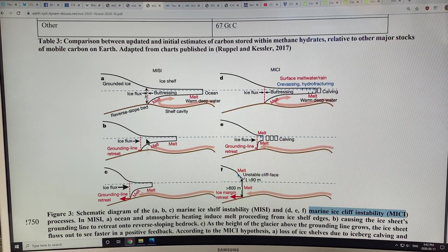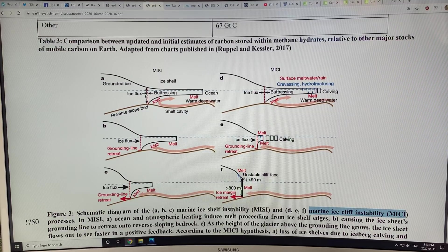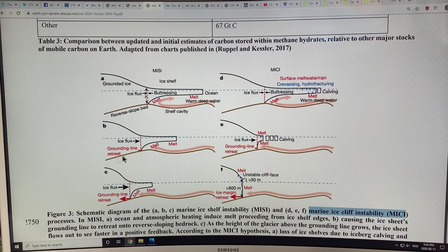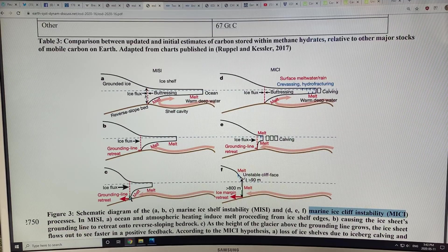This is an instability, an unstable situation, because the melting can increase as you go back further, because you're going into deeper and deeper water. Eventually, as the grounding line retreats further back, the warmer water can come in further.